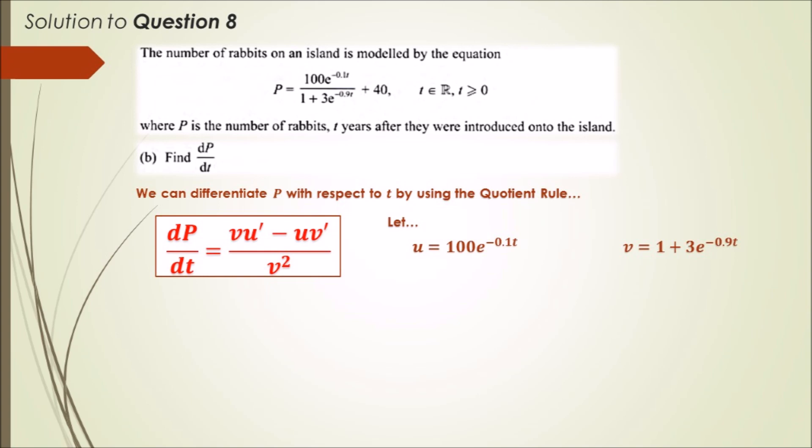To differentiate u, we differentiate the exponential by differentiating the power part minus 0.1t, drop the minus 0.1 down, multiply it to the 100, which gives us negative 10, and copy the exponential part. Likewise for v, differentiate 1 to get nothing, differentiate 3e^(-0.9t), drop minus 0.9 down times the 3 to get minus 2.7, and the exponential part.